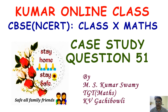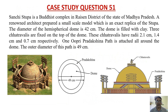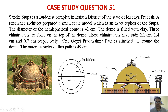Hello everyone. Today I am going to explain case study question number 51. This is the case study in which many students have asked doubts regarding Sanchi's Stupa. Sanchi's Stupa is a Buddhist complex in Raisan district of the state of Madhya Pradesh. A renovate architect prepared a small scale model which is an exact replica of the stupa. The diameter of the hemispherical dome is 42 centimeters.